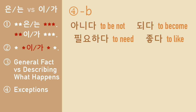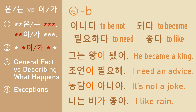There are some verbs that you normally attach 이/가 to the objects with. Technically 아니다 is not a verb, but it's included in this category. And 좋다 originally means 'to be good,' but it can also be used as a verb.